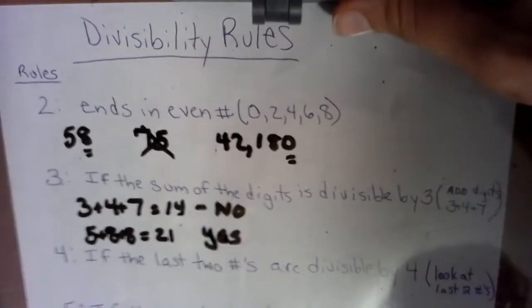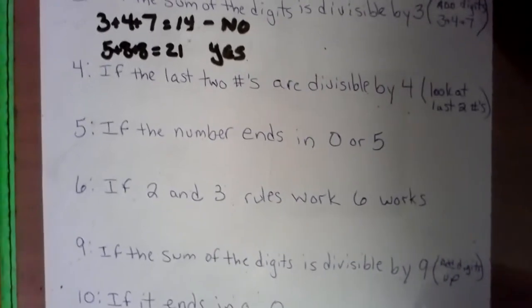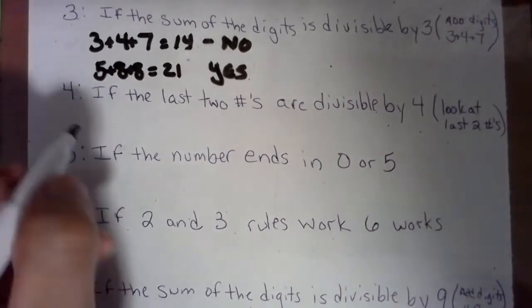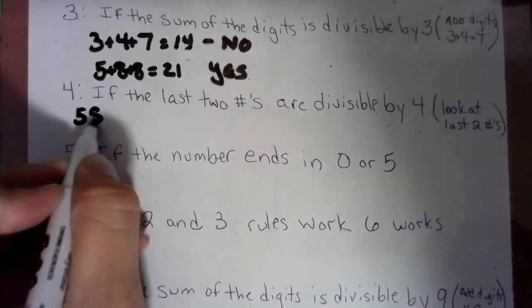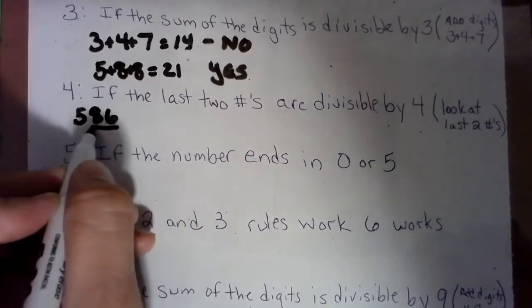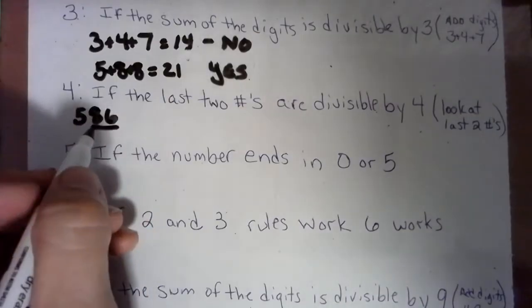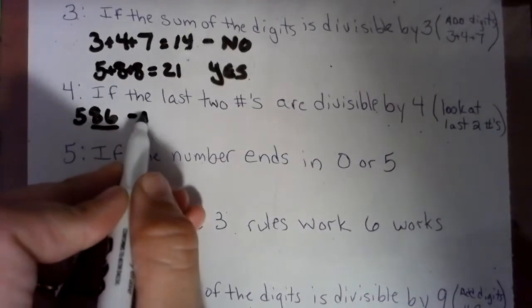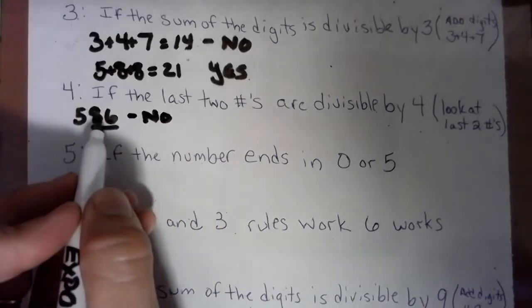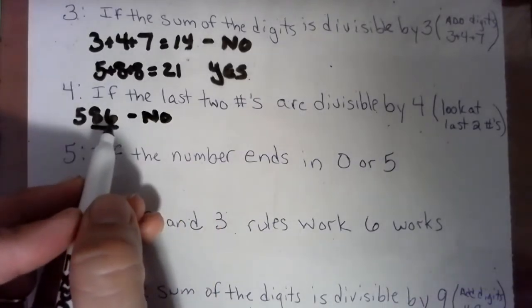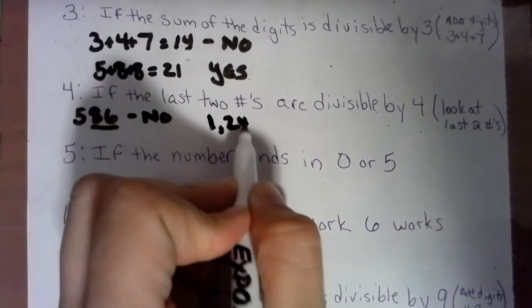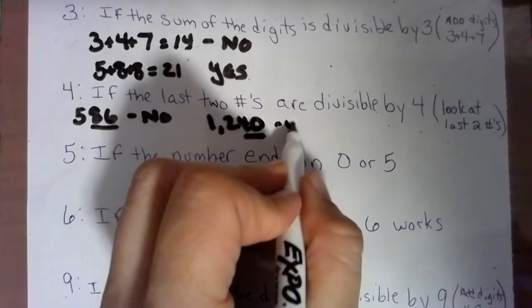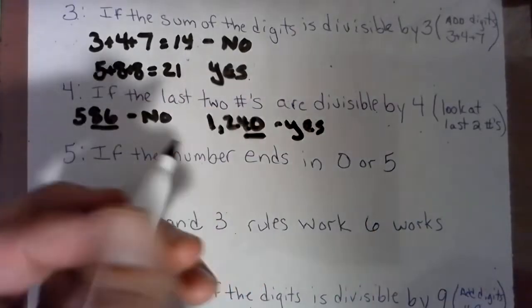If the last two numbers are divisible by four, that means if we have the number 586, we look and say, can four go into 86? And we can divide on the side if we do not know. This is a no because four can go into eight nicely, but it can't go into six nicely. So let's look at 1,240. Can four go into 40? Yes.